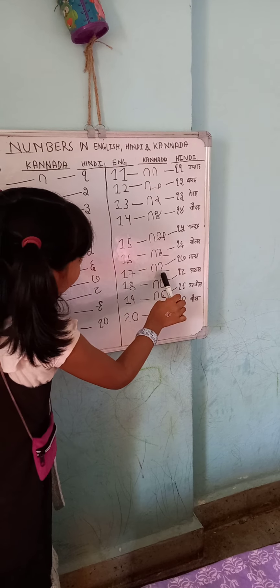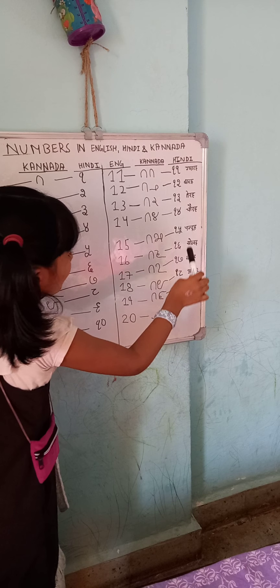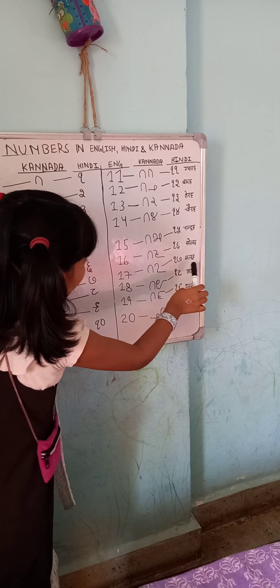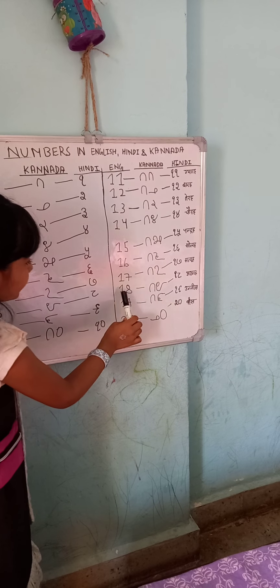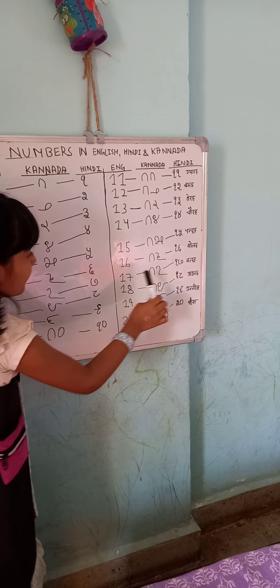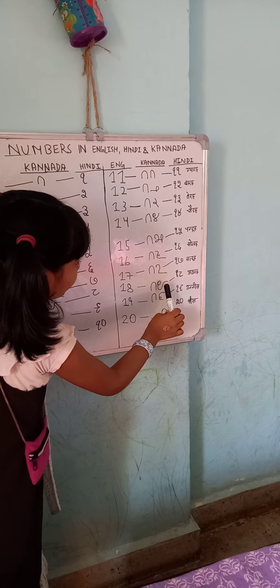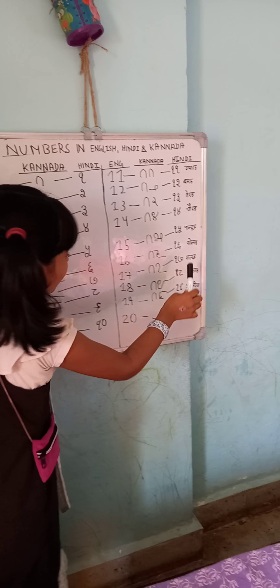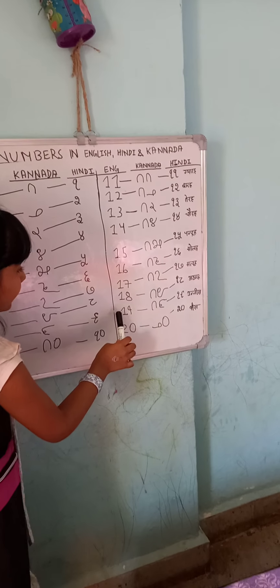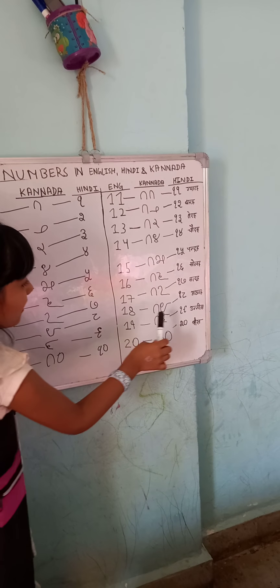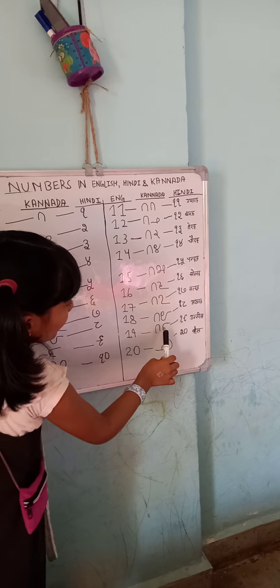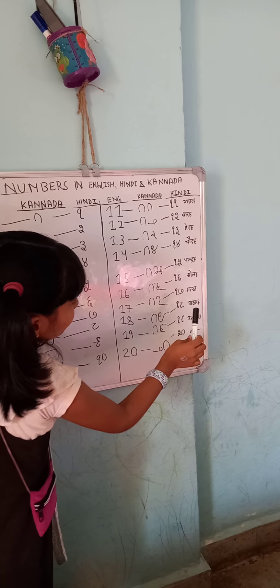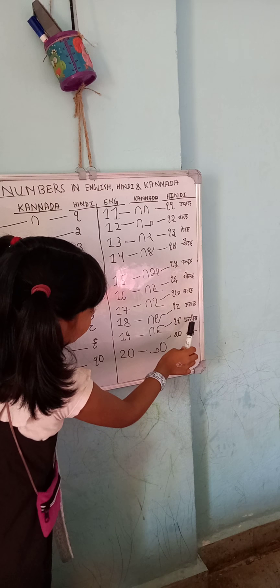16. In Kannada: Hadinaru. In Hindi: Solah. 17. In Kannada: Hadinelu. In Hindi: Satrah. 18. In Kannada: Hadinentu. In Hindi: Atharah. 19. In Kannada: Hatambhatu. In Hindi: Unnees.